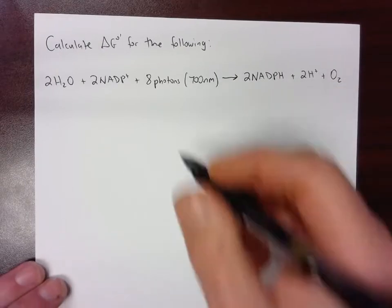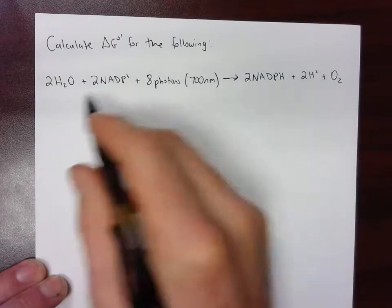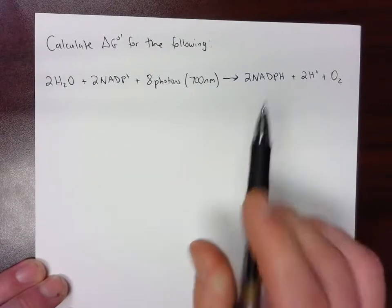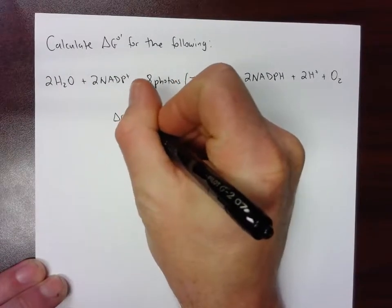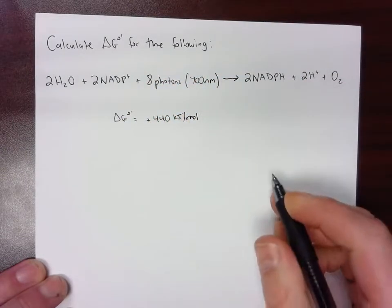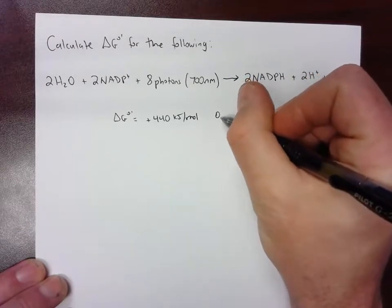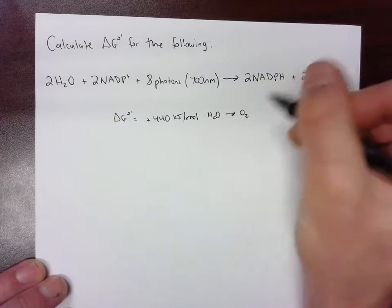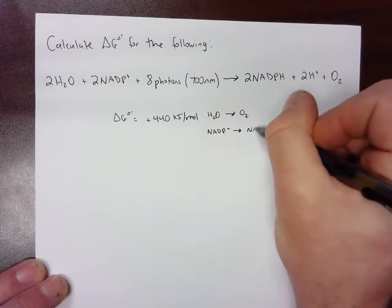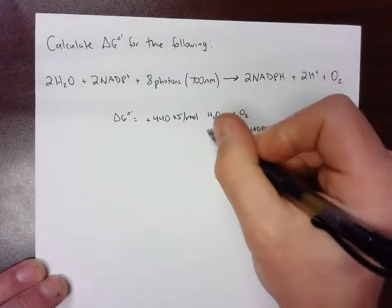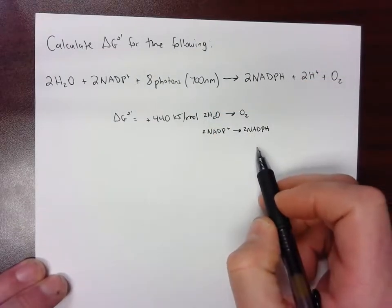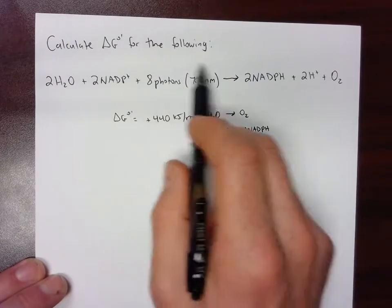Let's look at the energetics of this process including the light energy. Just considering the redox pair water to oxygen and NADP plus to NADPH, that one as we saw in the last video is about 440 kilojoules per mole. This is H2O to O2 and NADP plus NADPH, two of those and one oxygen.